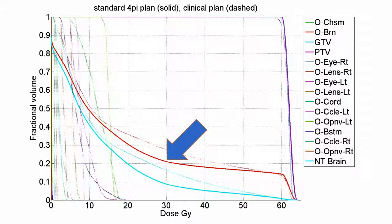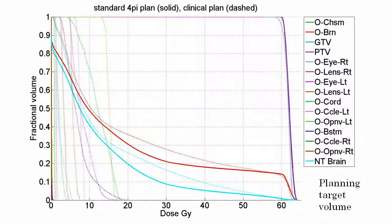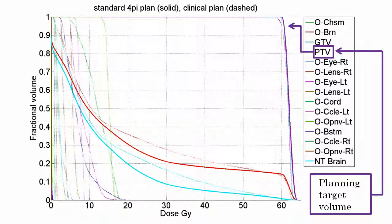What we have here is a dose volume histogram or DVH. And how these are read is that it tells you the amount of dose or more that a certain volume of an organ at risk or a structure is getting. For example, if we look at the brain contour, you can see that 20% of the brain is receiving 30 grays or more of dose. So what we see here is that the planning target volume is receiving more dose, whereas we are sparing more of the organs at risk in the 4Pi plan.